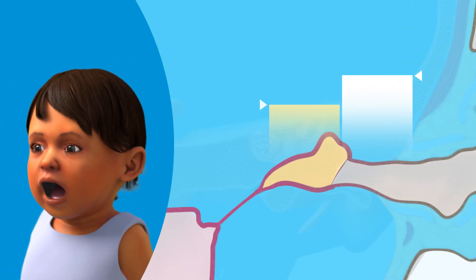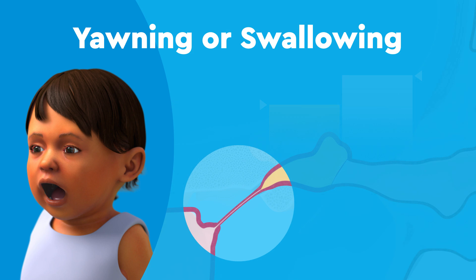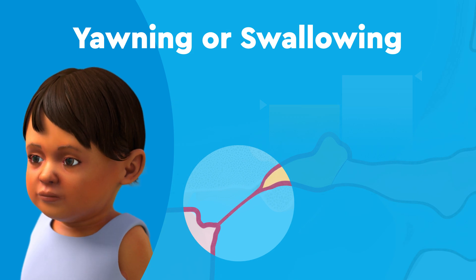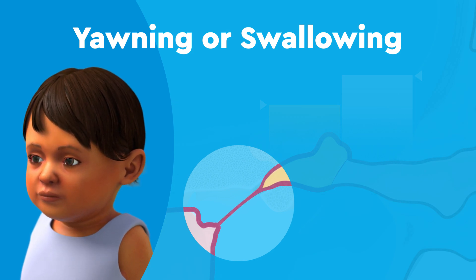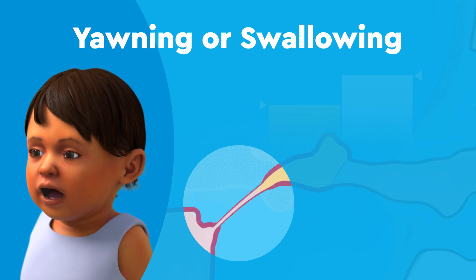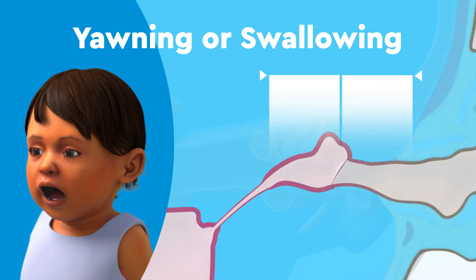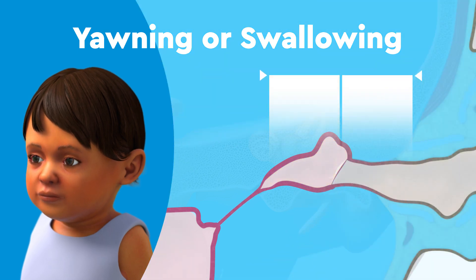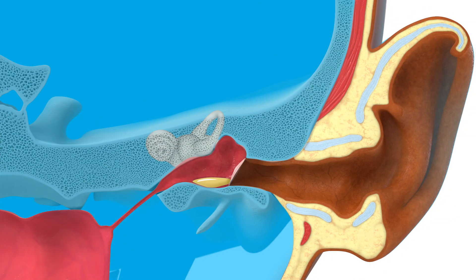Whenever you pop your ears by yawning or swallowing, the tubes open up and relieve the pressure. In the same way, the eustachian tubes also help keep fluid from building up behind the eardrums.